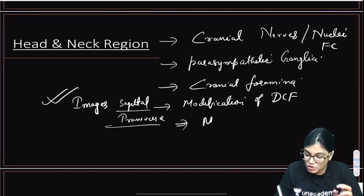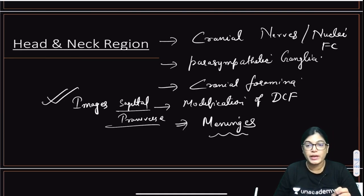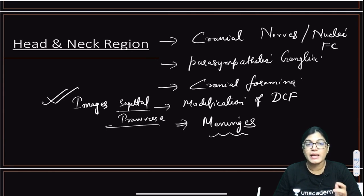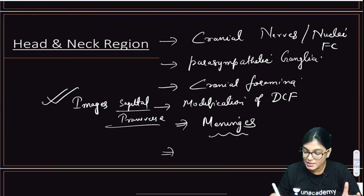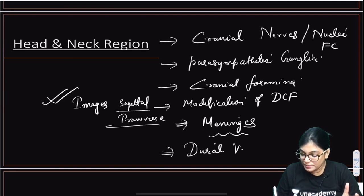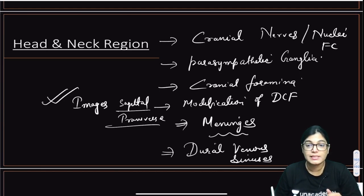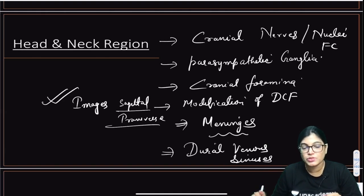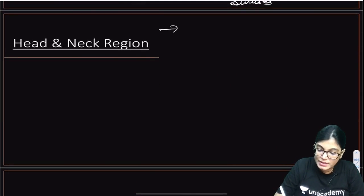Meninges is a very important topic. You must know the dural folds — tentorium cerebelli, falx cerebri, falx cerebelli, diaphragma sellae, and which structures pierce them. Along with meninges, you must complete dural venous sinuses. One sinus is extremely important — the cavernous sinus. Clinical MCQs are directly coming from this topic, so you absolutely cannot skip it.